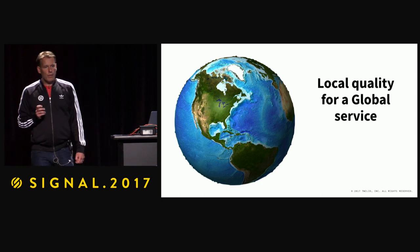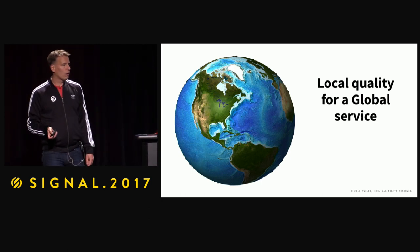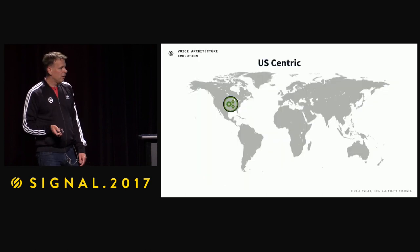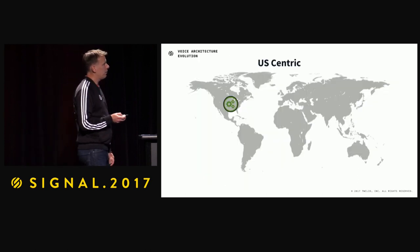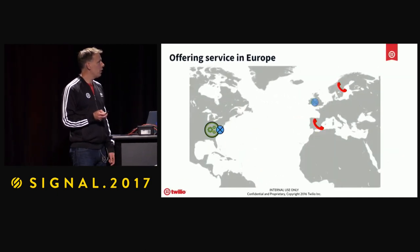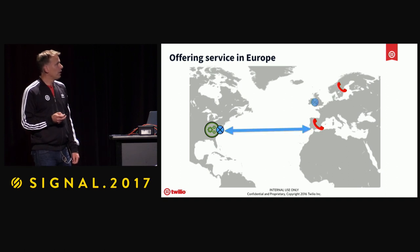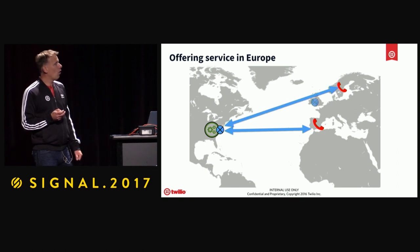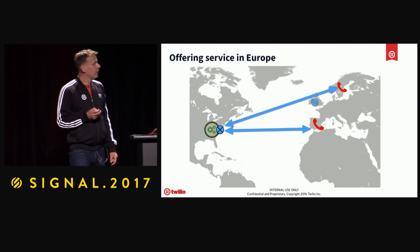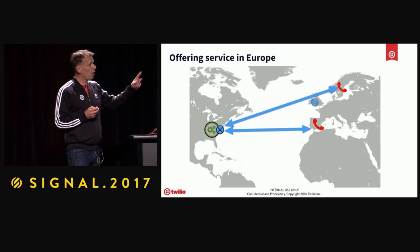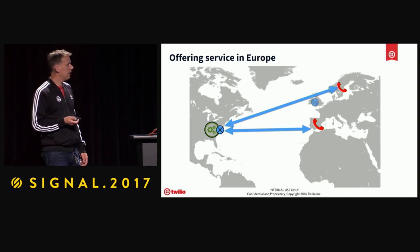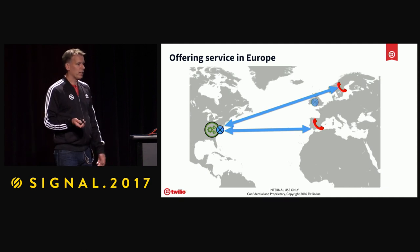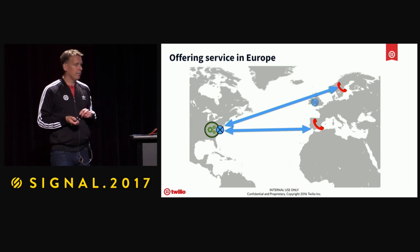Another problem we tackled five years ago was how to achieve local call quality for a global service. We started US-centric but quickly wanted to serve Europe. A caller in Spain would contact the data center in the US, wanting to call a user in Sweden — and as the call hopped across the Atlantic twice, we added significant latency. This led to a poor experience for callers in different regions. If Europe was bad, you can imagine Australia — terrible.